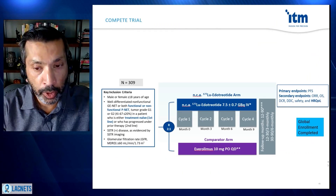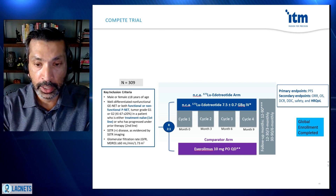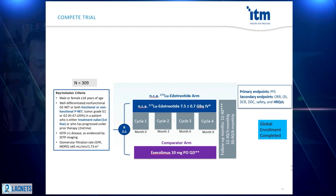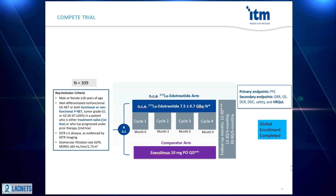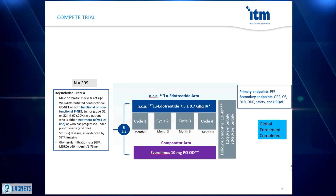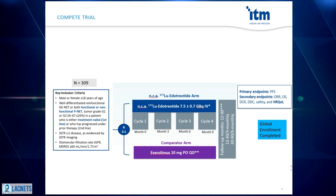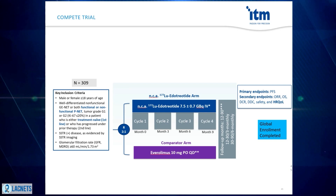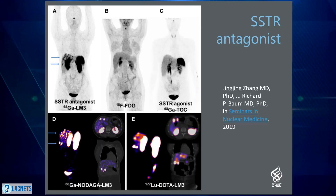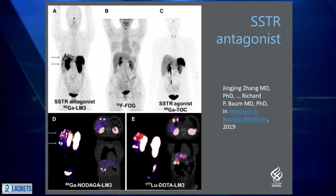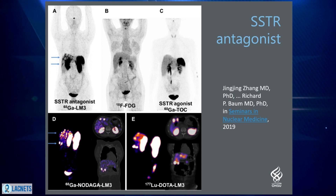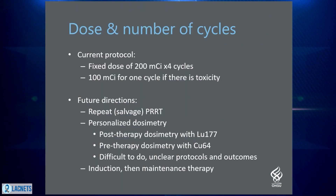Other important ongoing trials include one by a company called ITM, which has the DOTATOC compound — also labeled with lutetium-177, also known as edotriotide. It's felt to be very similar to dotatate, so it will probably have a very similar efficacy and toxicity profile, though final results are yet to be seen. There are also other peptides which are actually antagonists to the somatostatin receptor and can therefore bind the tumor more strongly — these are being evaluated in clinical trials for both imaging and therapy.